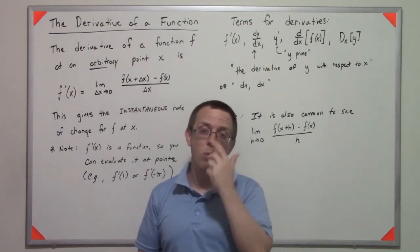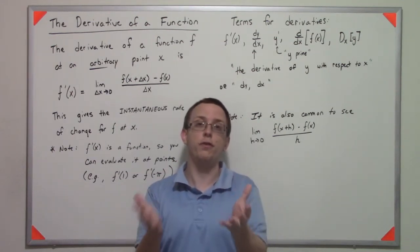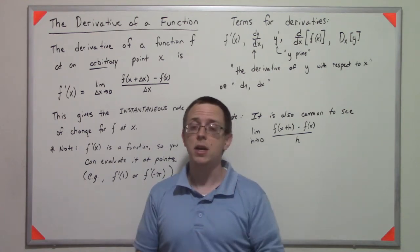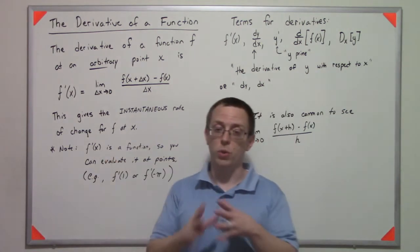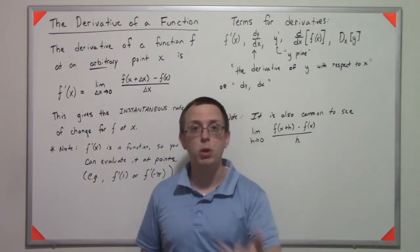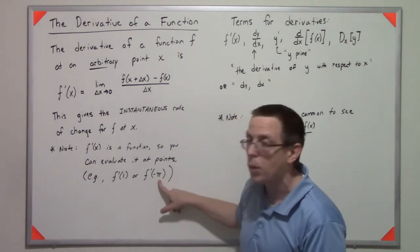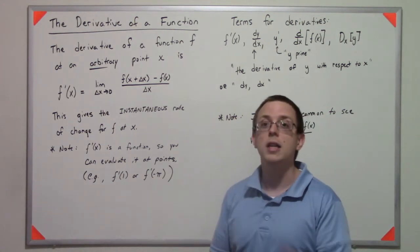Take the limit, and what we'll have is some other function that's in terms of x. So then that function, f prime of x, will just be a function I can plug numbers into. I can take f prime at 1, I can take f prime at negative pi. It doesn't matter.